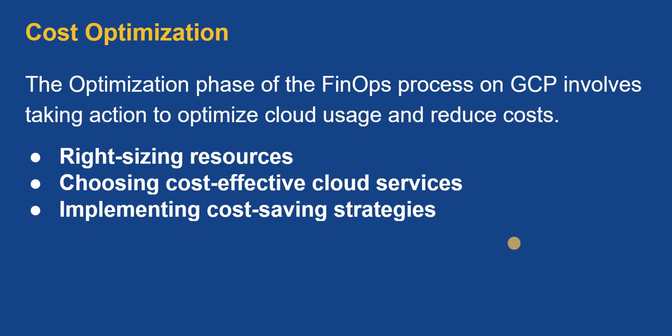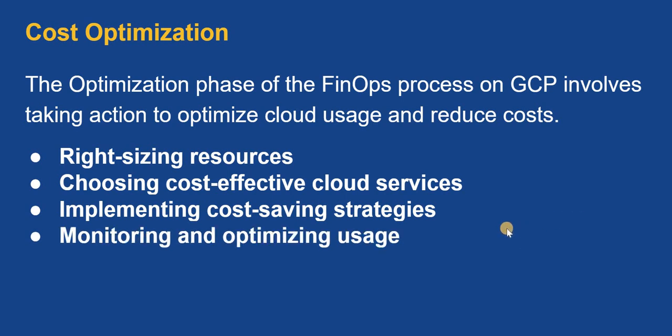These best practices are available in Google documentation for each service. Sometimes you can use preemptible VMs to reduce cost, use VPC peering, or choose different persistent disk types — standard, balanced, or SSD — all with different pricing. The fourth step is monitoring and optimizing usage. Regularly monitor your usage; if a VM is only utilizing 5–10% CPU, you can reduce its size. Also set up alerting so you're not surprised by unexpected bills.